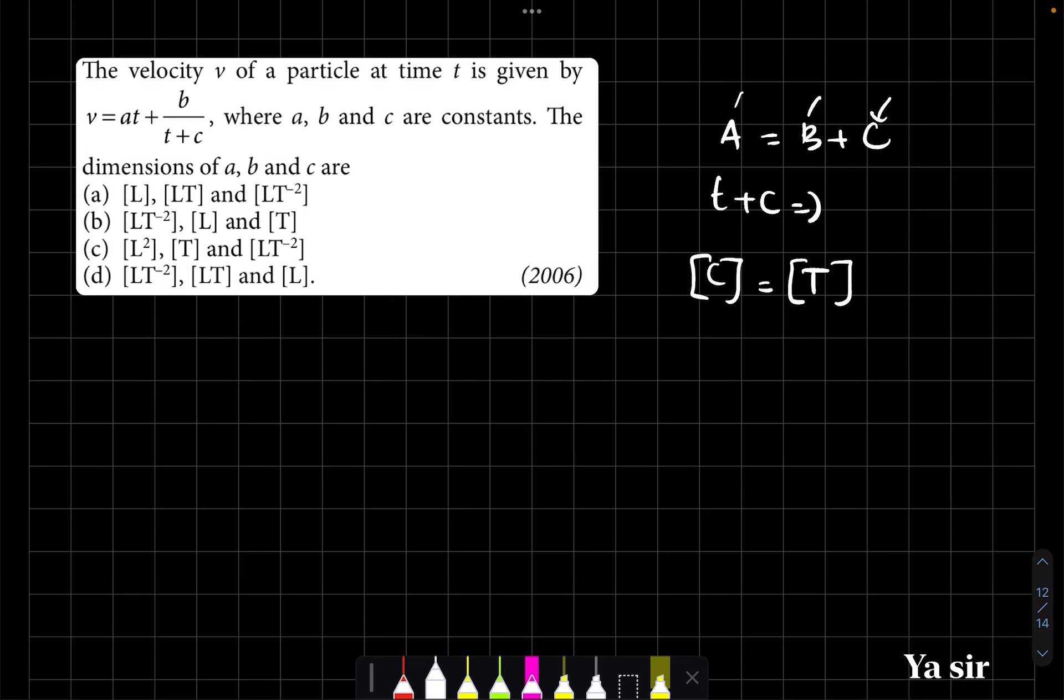So next you can see that what about a t - the dimension of a t should be same as v dimension. So a dimension is LT to the power minus 2. So that is the dimension of a also we got.